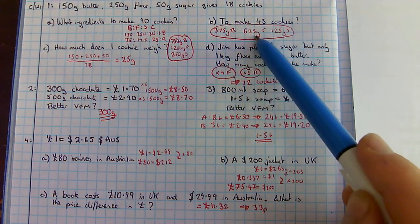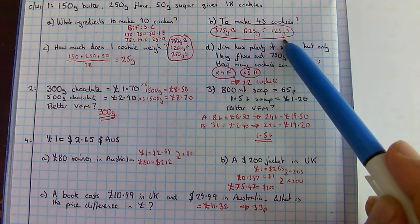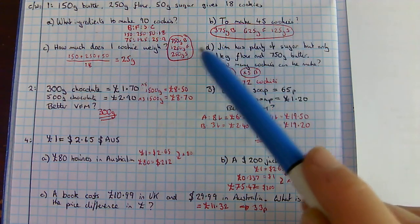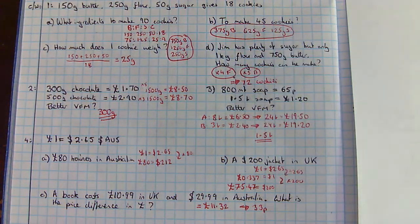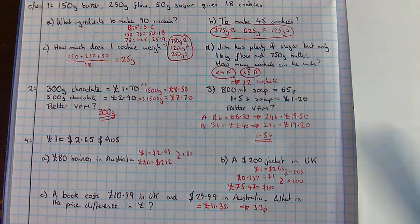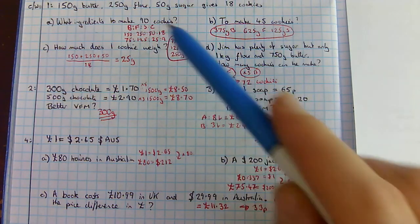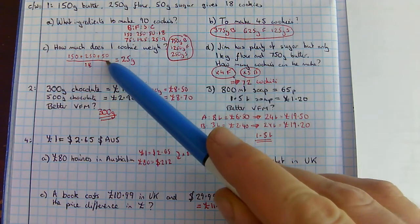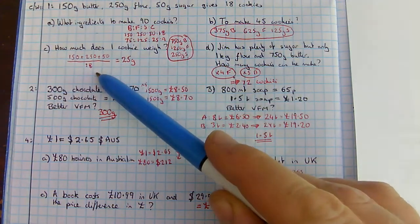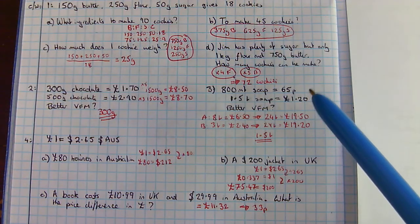You could have done that just by halving what you had done for 90 cookies. Adding up all of the ingredients gave you 450 grams to make 18 cookies. 450 divided by 18 gives you 25 grams per cookie.